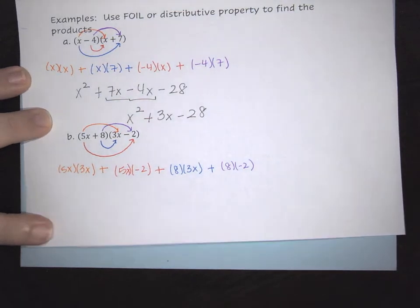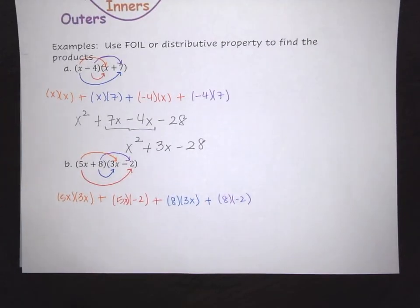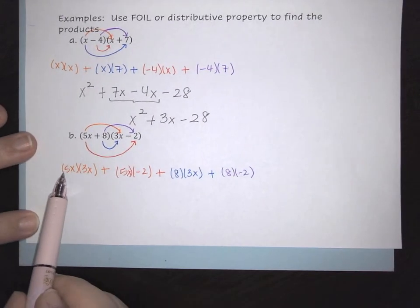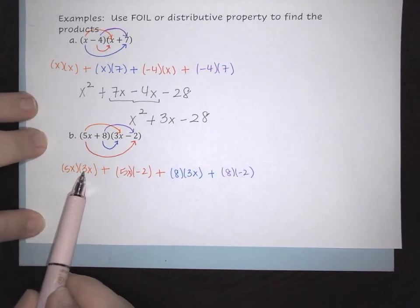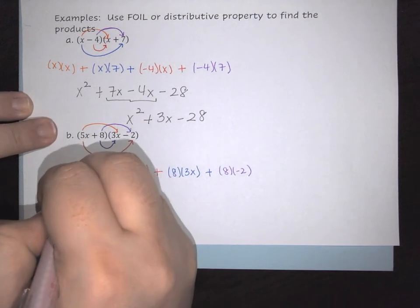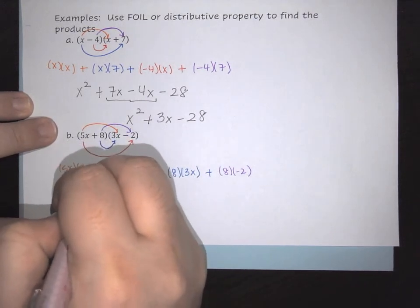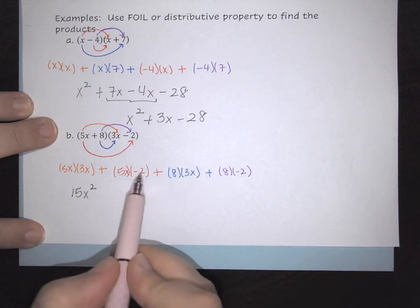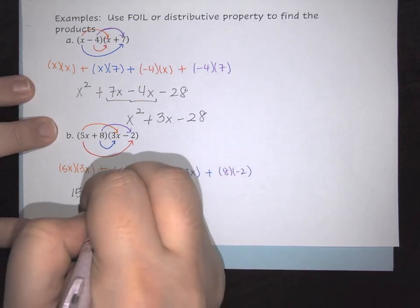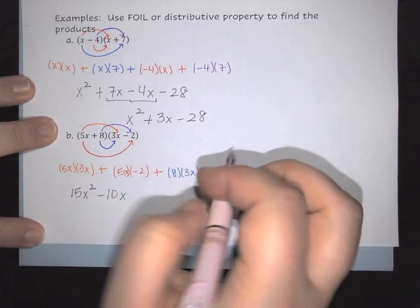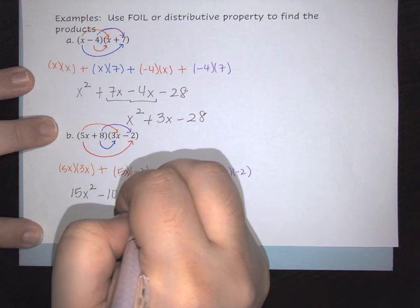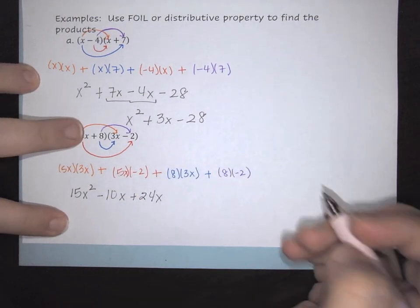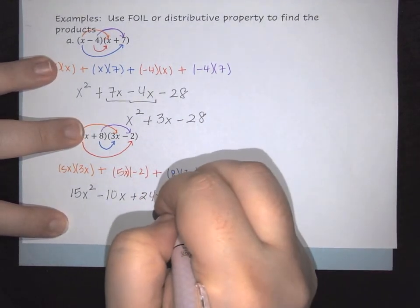Just like before, we're going to actually do the math and combine your like terms. In this first one, we're going to multiply the numbers together. 5 times 3 is 15. X times X is X squared. Then we have 5 times negative 2, so this is minus 10X. 8 times 3 gives you plus 24X. 8 times negative 2 makes it minus 16.